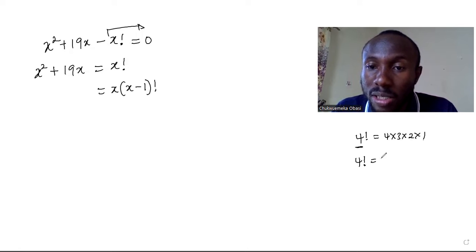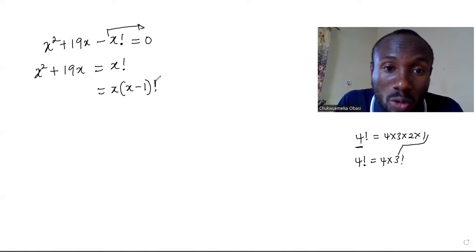When you have four factorial, you can decide to say this is four times three factorial, because three factorial you're still going back. So you can decide to stop here with the factorial sign because I've not exhausted all of these factorials.